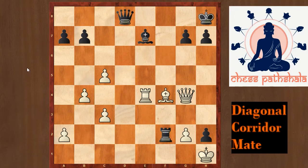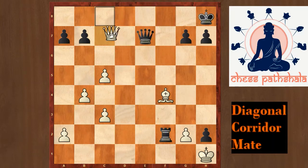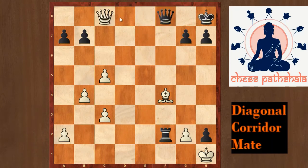He played rook takes e7. This rook cannot be taken because queen c8 check would come and then it is a back rank checkmate — after queen f8, queen takes f8 it would be checkmate.